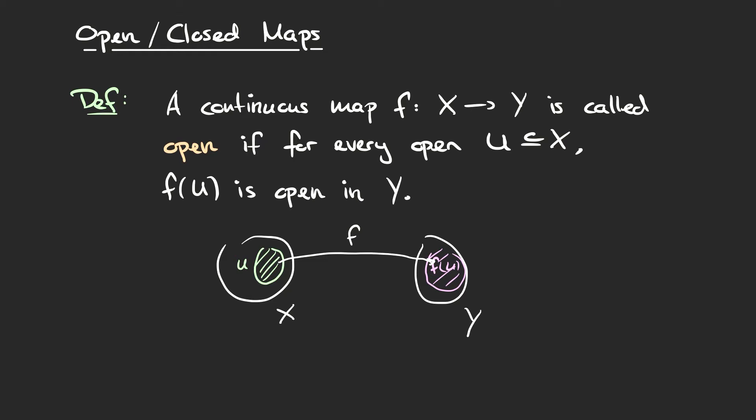Maybe before moving on, I'll give a counterexample to show that not every continuous map is an open map. We can consider a map that maps the entire real line to a point — a map f from ℝ to ℝ that takes any point to 0. This map is continuous because the pre-image of any open set containing 0 is the entire real line, which is open, and if the open set does not contain 0, the pre-image is empty, which is also open. However, f is not an open map because it maps the entire real line, which is open, to a point which is not open.